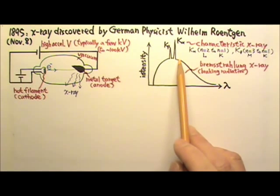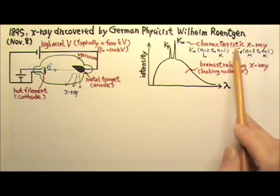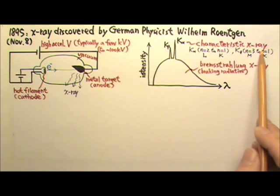These sharp peaks, the discrete part of the spectrum, is called characteristic X-rays. Those electrons accelerated by high voltage can knock out one of the inner shell electrons in the metal target. And when an electron in an upper state transitions down to fill the vacated lower state, a photon is emitted.